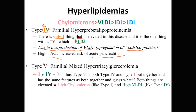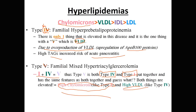Type 5 is familial mixed hypertriglyceridemia. The math works out nicely: 1 + 4 = 5. Type 5 is a mixture of type 1 and type 4 — high chylomicrons from type 1, and high VLDL from type 4. The features are both put together: acute pancreatitis from both, plus xanthomas and retinitis from the chylomicrons.